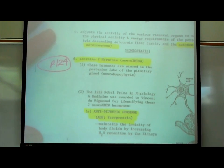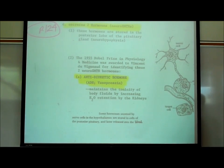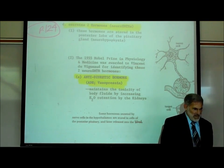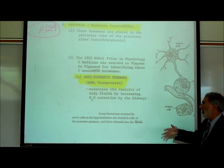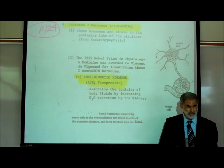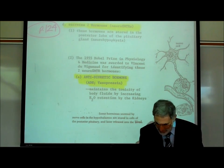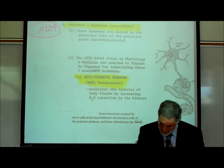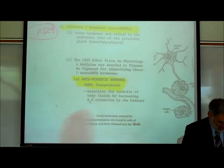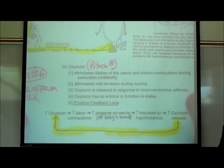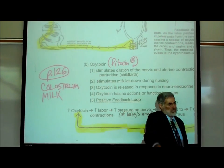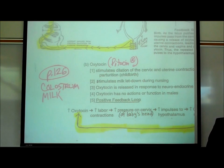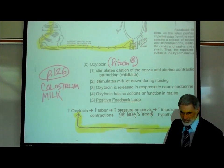The two neurotransmitter hormones were identified in the 1950s. One is called antidiuretic hormone, abbreviated ADH, also known as vasopressin. The other, identified on page 126, is known as oxytocin, which is available as a synthetic medicine under the brand name Pitocin.